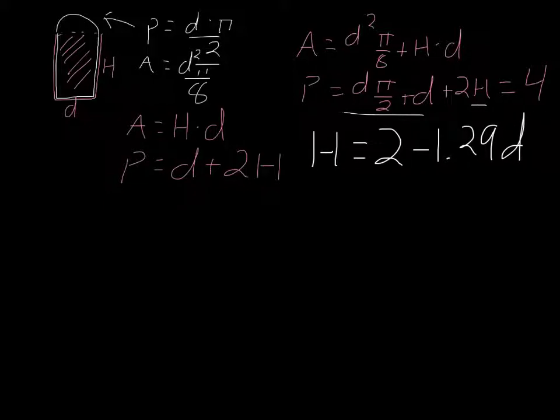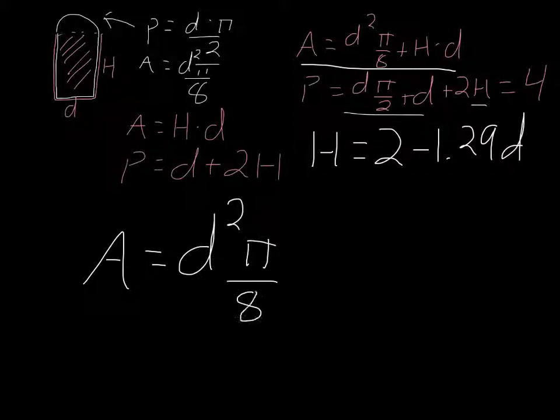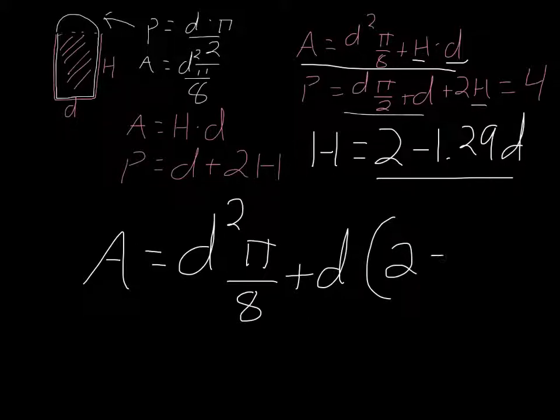So now I'm going to say that the total area is equal to d²π/8 + d times (2 - 1.29d). And then we can simplify all that.